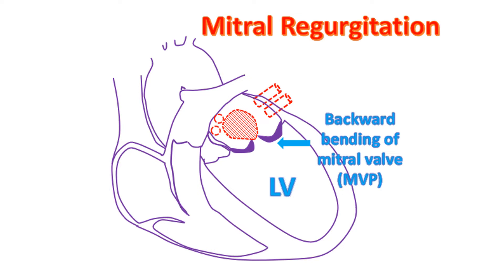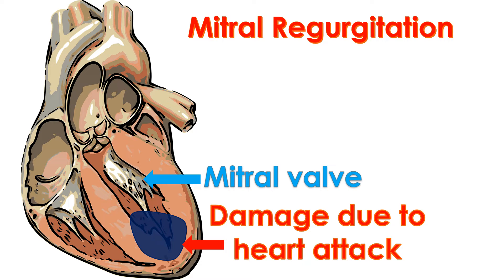Age-related degenerative changes in the mitral valve can also produce mitral regurgitation. Rarely, infections of the valve can increase the leak and need prolonged treatment for control. Another important cause is a heart attack. A heart attack weakens the region of the left ventricular muscle which holds the mitral leaflets taut when it contracts. Rarely, a heart attack can also cause a rupture of the muscle which holds back the mitral leaflets when the left ventricle contracts. This is a serious situation because it leads to sudden severe leak in the mitral valve.